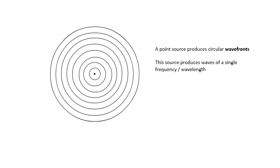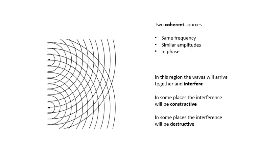Imagine them going away from this point in the middle. Here are two sources and they are coherent. You need to know what coherent means. There are three conditions for coherence: these two sources have the same frequency, they have similar amplitudes, and they are in phase. They can be out of phase, but as long as they're out of phase by the same amount every time. We're going to keep it simple — same frequency, similar amplitudes, in phase. They are coherent.